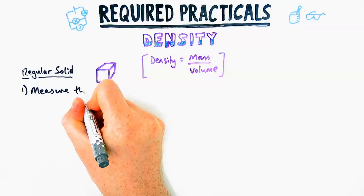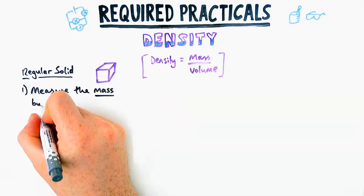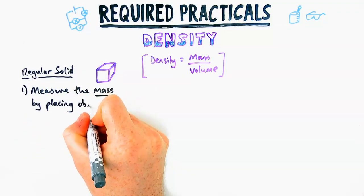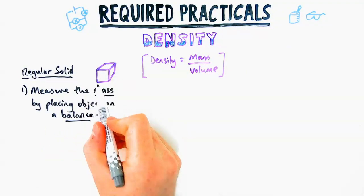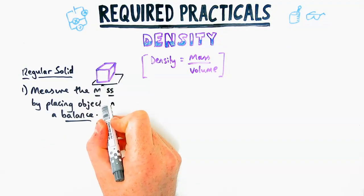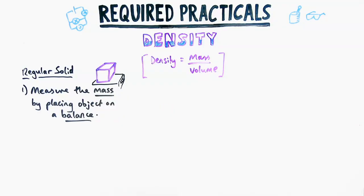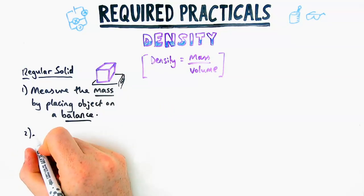A regular solid is a cuboid or a cylinder, but realistically it's going to be a cube or cuboid. To find the mass, we place the object on a balance. Balance comes up in mark schemes - I wouldn't say scale because scale could be anything. Measuring scales is fine, I prefer balance.